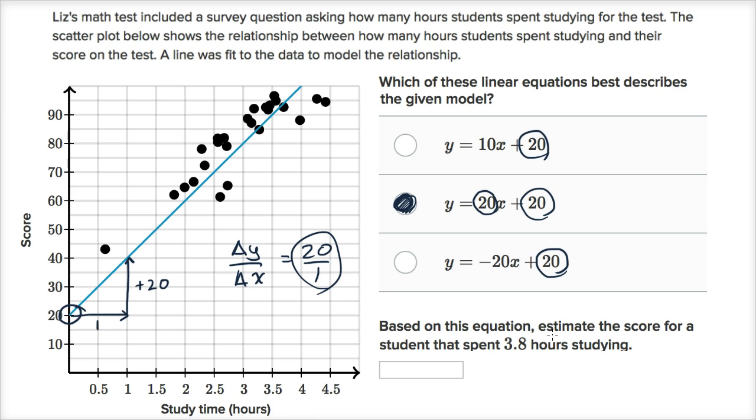Based on this equation, estimate the score for a student that spent 3.8 hours studying. So we would go to 3.8, which is right around here. So let's estimate that score. If I go straight up, where do we intersect our model? Where do we intersect our line?